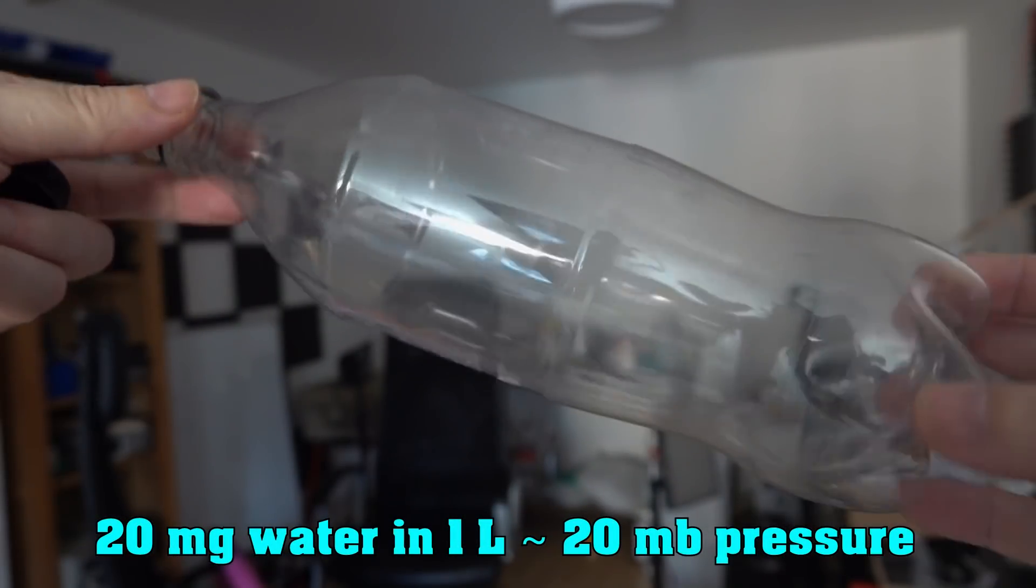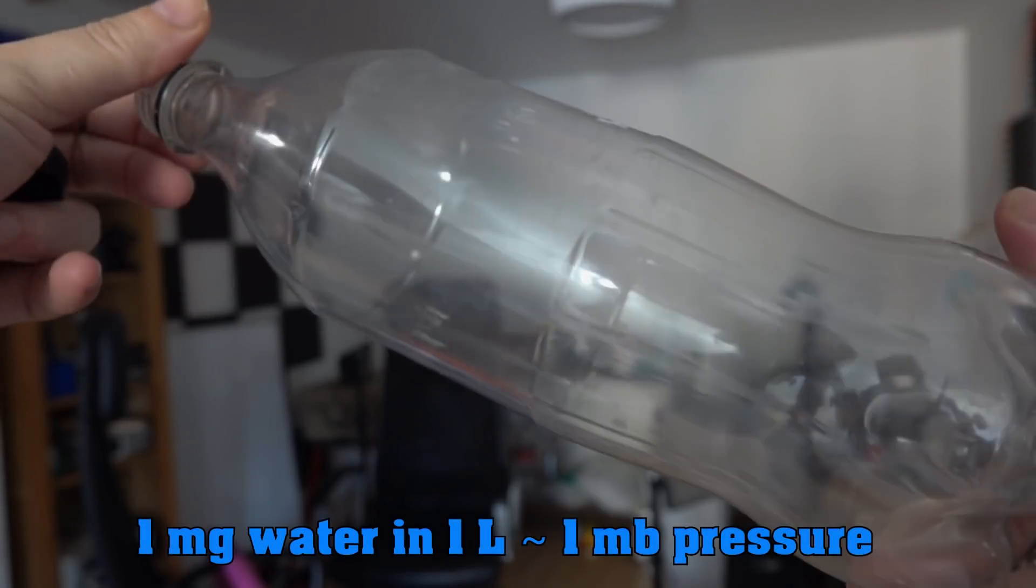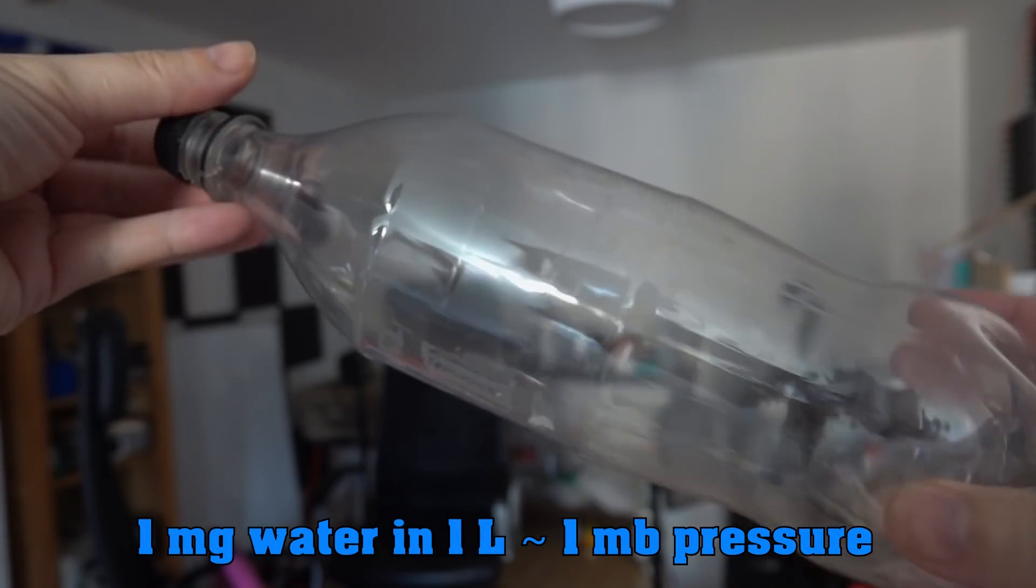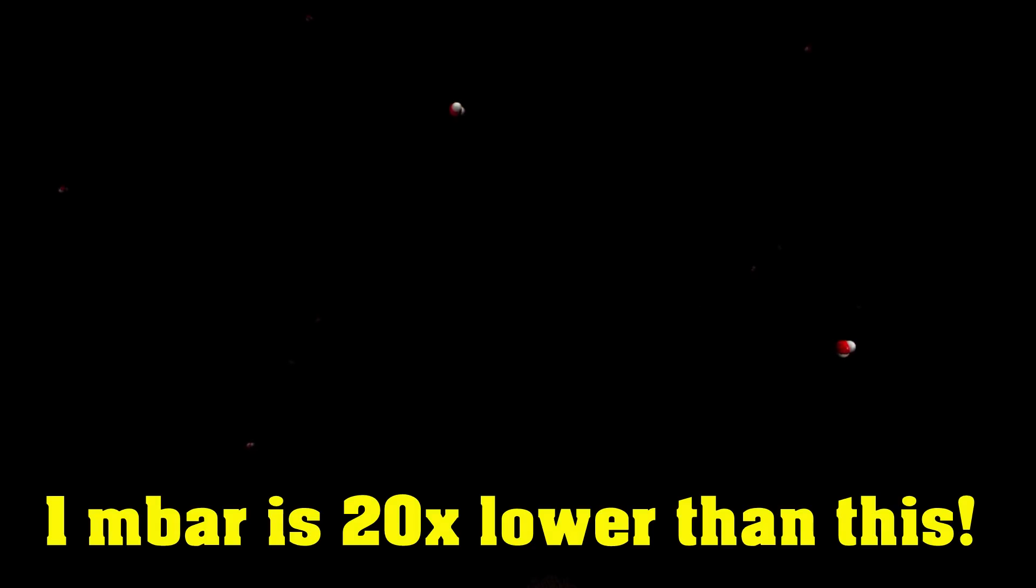Yeah, but whatever. Let's chop that down from a single drop of water to a 20th of a drop of water, about one milligram, which is now going to give us a vapor pressure of water in our 1 liter pop bottle of about a millibar. That's a thousandth of an atmosphere. Yeah, that's the pressure that they're planning to run the Hyperloop on.